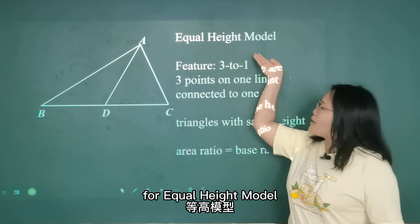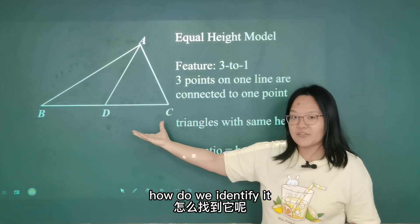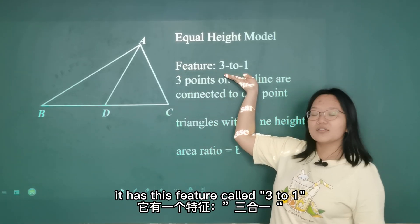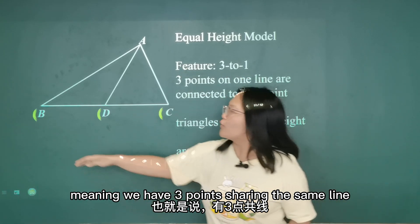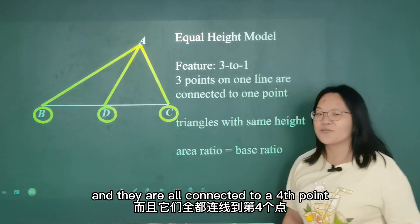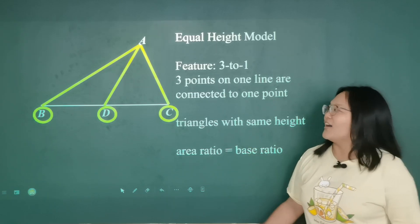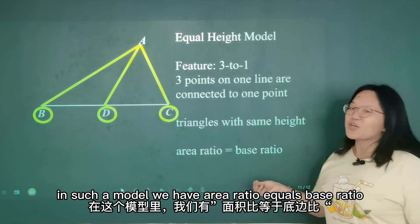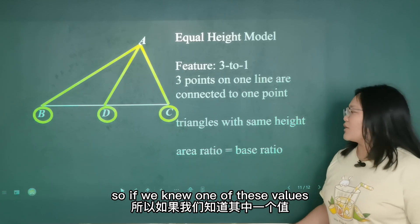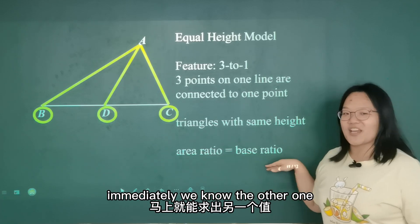For equal height model, it looks like this. How do we identify it? It has this feature called 3 to 1, meaning we have three points sharing the same line and they're all connected to a fourth point. And what good does this model do? In such a model, we have area ratio equals base ratio. So if we knew one of this value, immediately we know the other one.